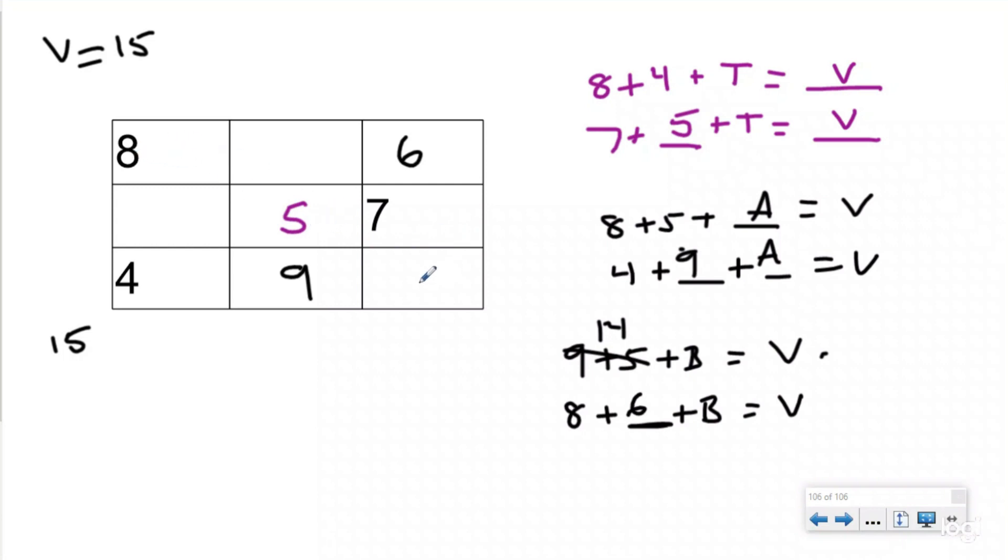So eight plus five is 13, plus two would be 15. Let's just double check that I got it correct, because now I have these three. They should equal 15. Six plus seven is 13, plus two is 15. Awesome. Nine plus five is 14, plus one would be 15. And then seven plus five is 12, plus three would be 15. So I used my problem solving strategy, and I thought through it to help me figure out all of these boxes that I didn't have at the beginning.